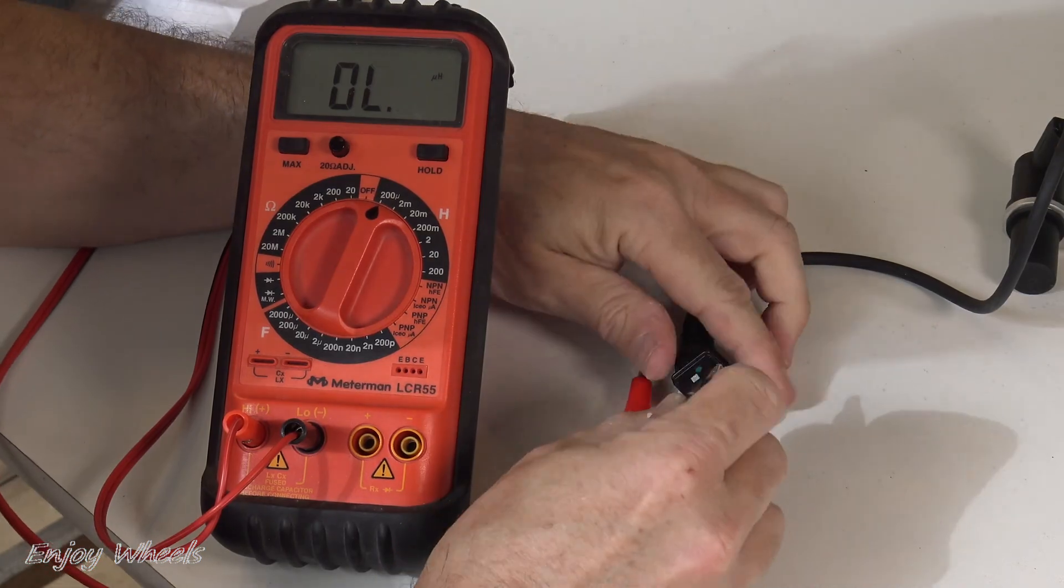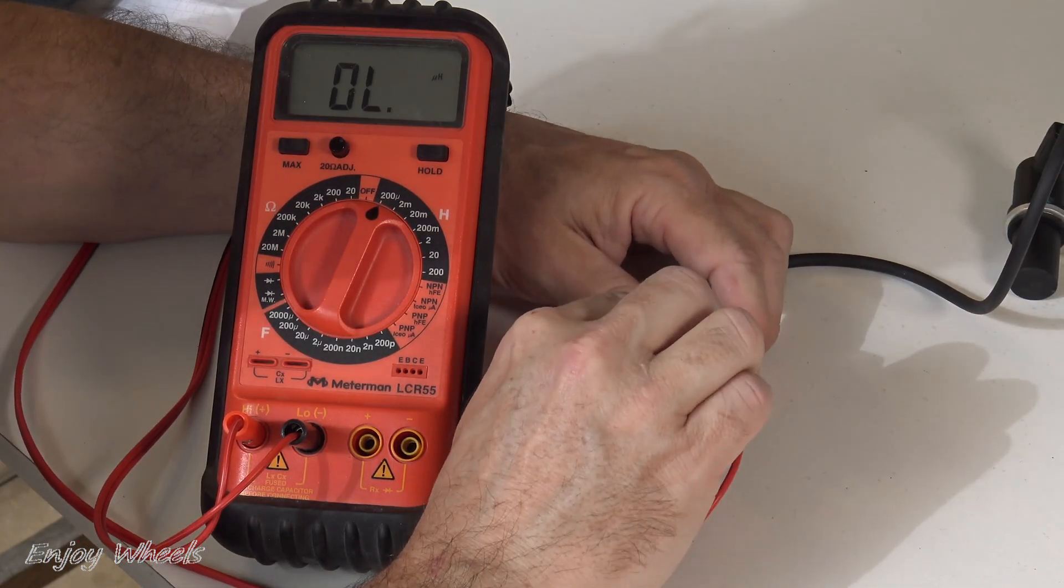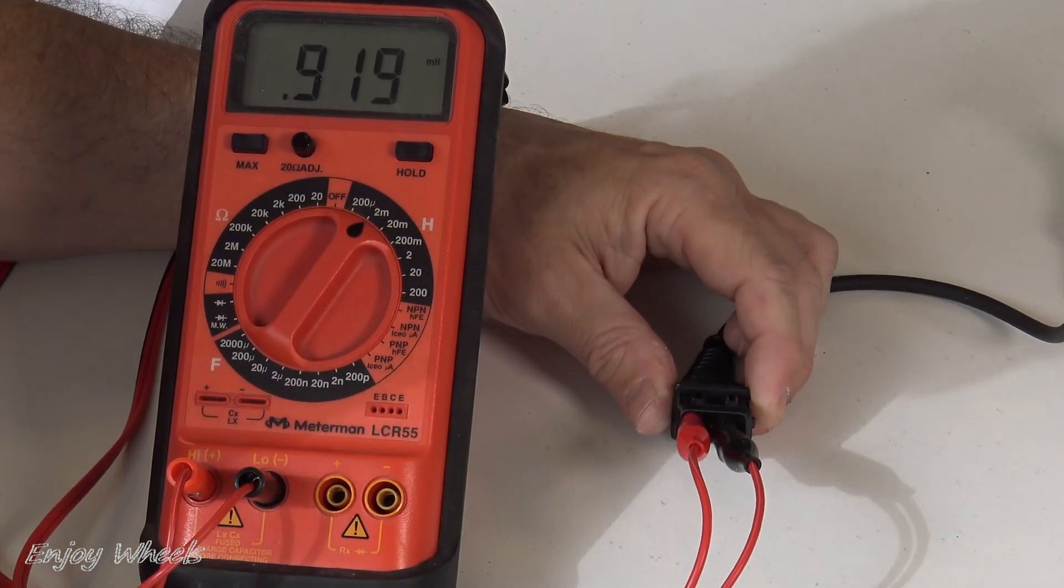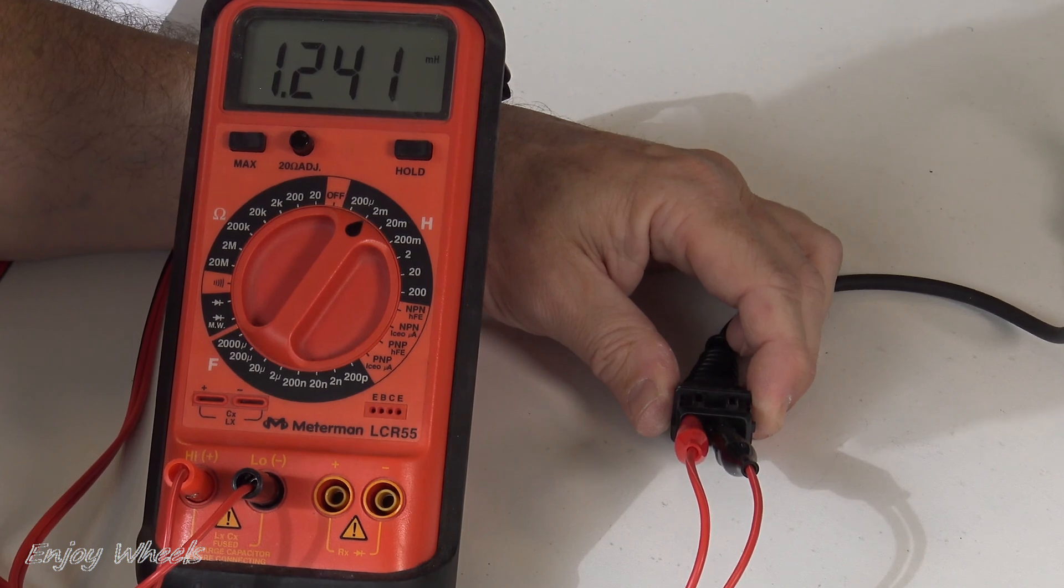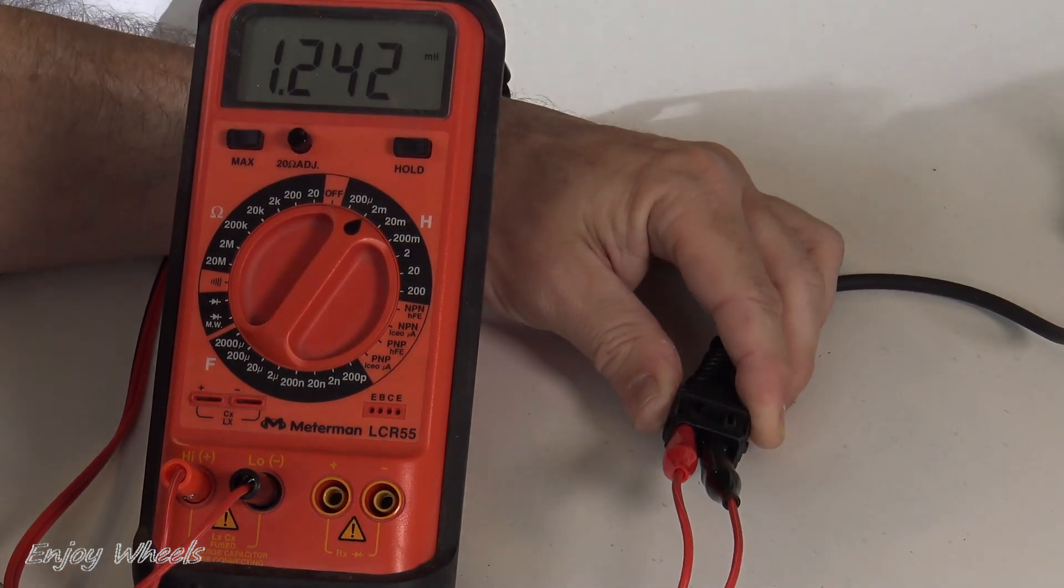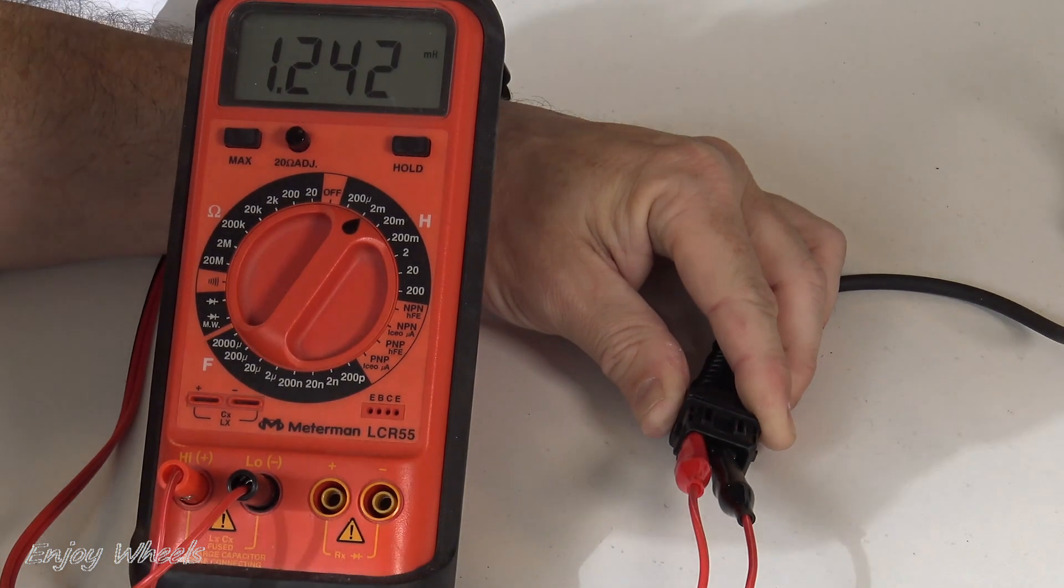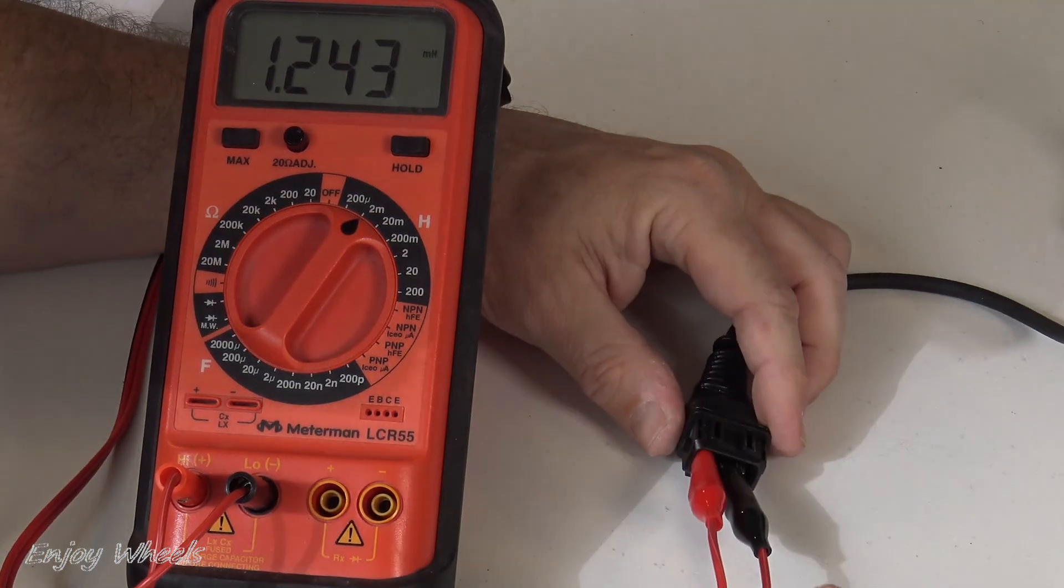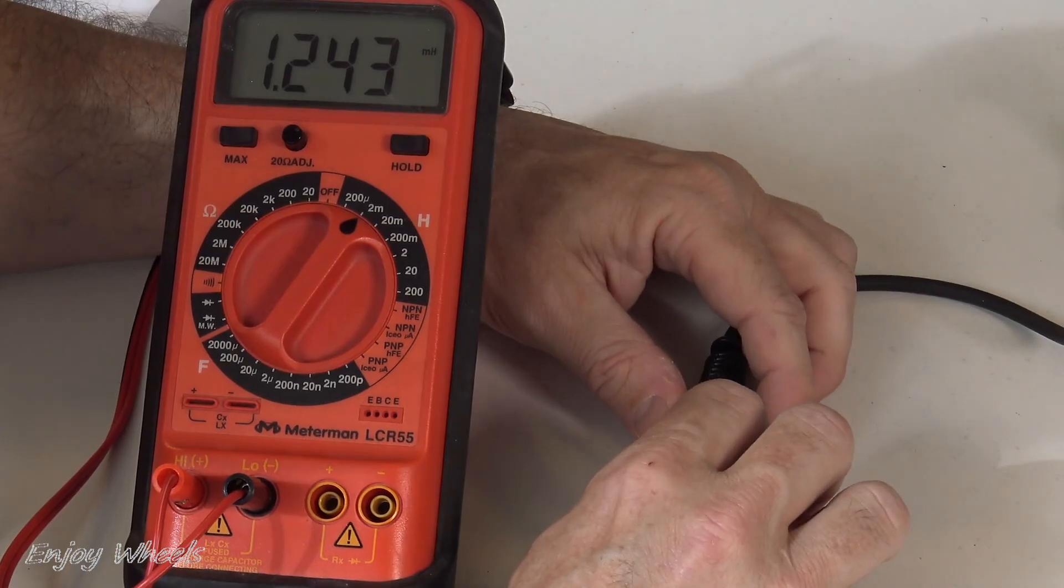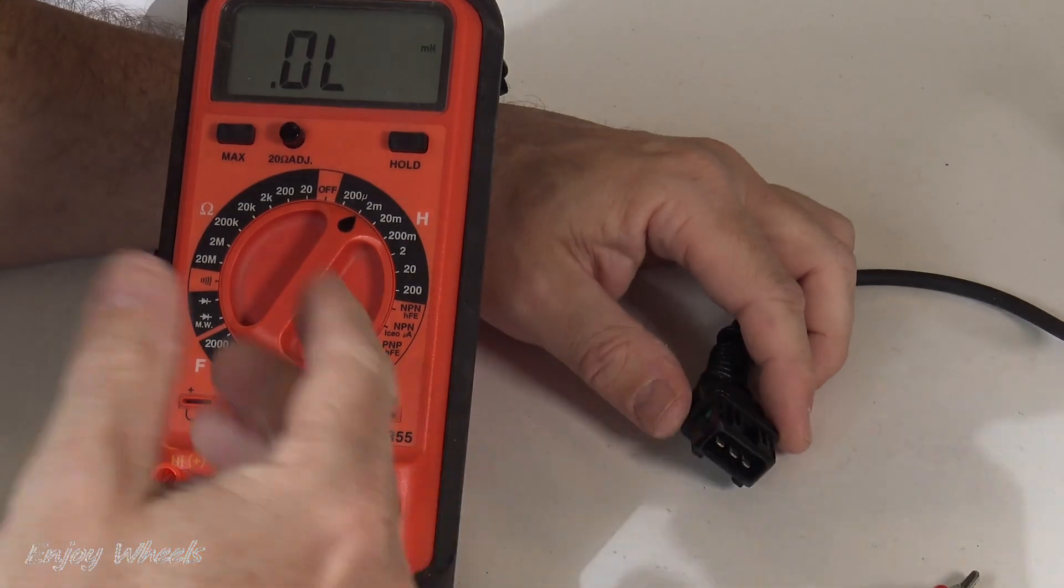Same thing for secondary. Here I have to change the range. And there, I read 1.2 millihenries. This is much higher than the value of the primary, so I don't need to subtract the inductance value from the cables. At this stage, you can tell yourself that the sensor is good.